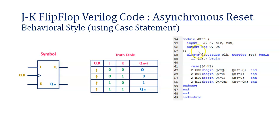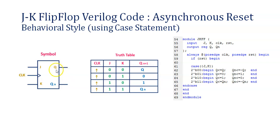We just need to write code for this in behavioral modeling style using case statement. The module name given is JK, with end module written at the close. Inputs are J, K, clock, and reset. In behavioral modeling style, outputs should be of reg data type, so Q and QN are declared as reg, where Q is the normal output and QN is the complemented output. We write the keyword always at with a sensitivity list where output depends on the positive edge of clock and positive edge of reset, enclosed in begin and end.